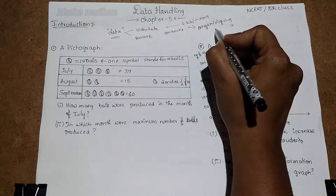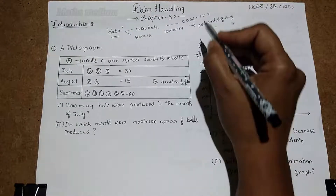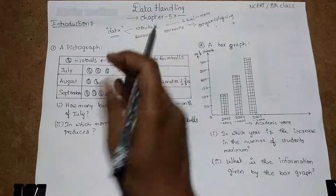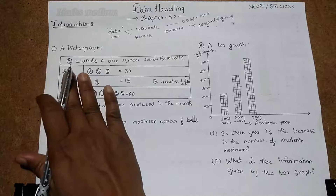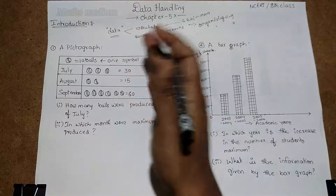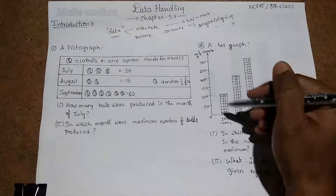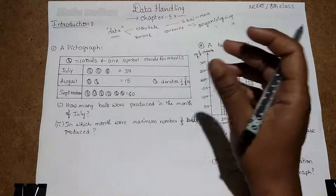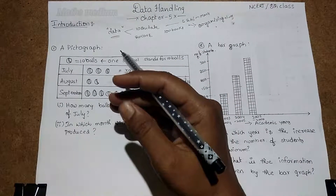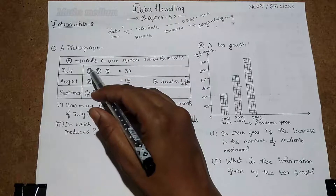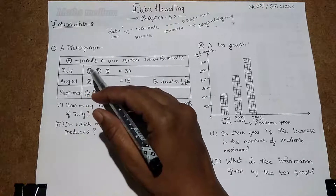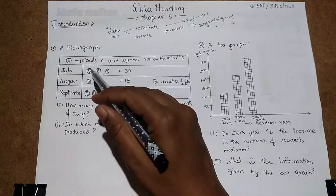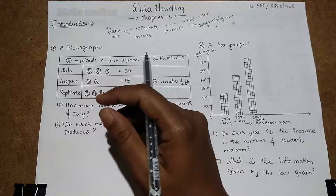If you take that data and represent it graphically, in earlier classes you will have learned about the pictograph, bar graph, and double bar graph. A pictograph is a pictorial presentation of data using symbols. A bar graph represents data in terms of bars. A double bar graph is used for comparison between two sets of data. Let's take a recap on all three.